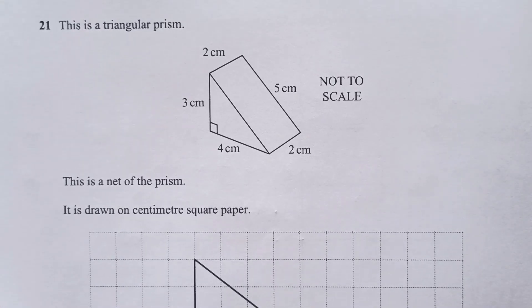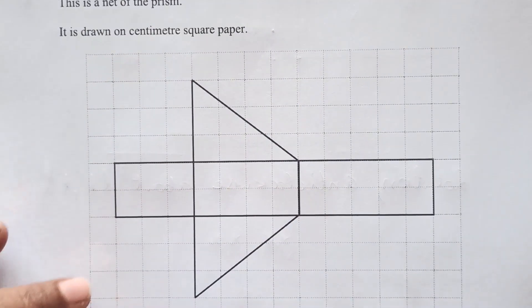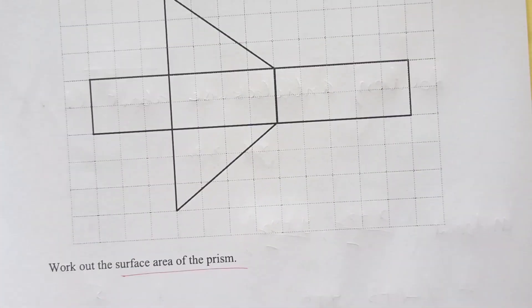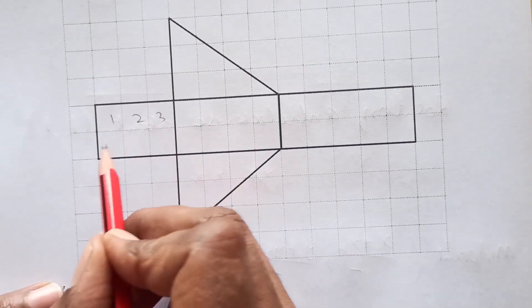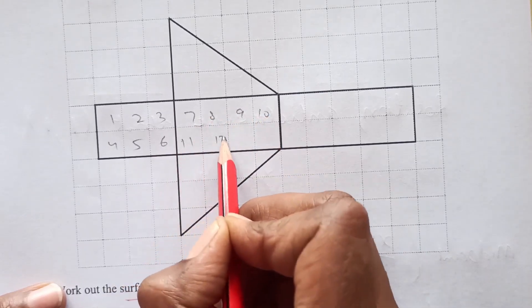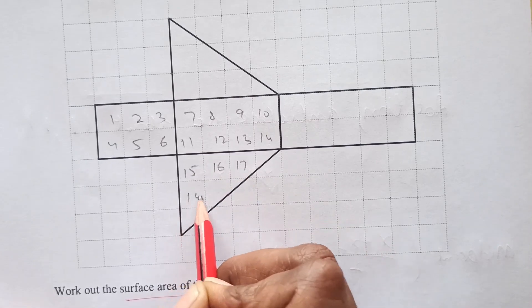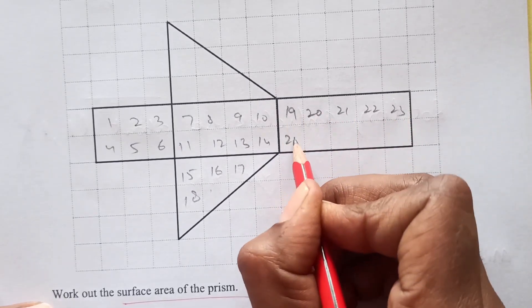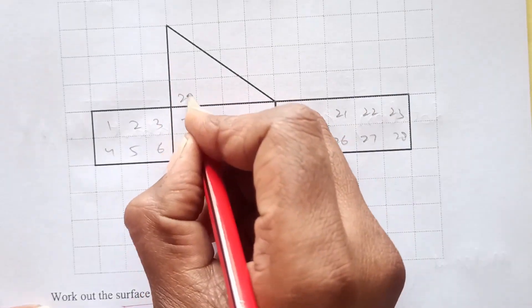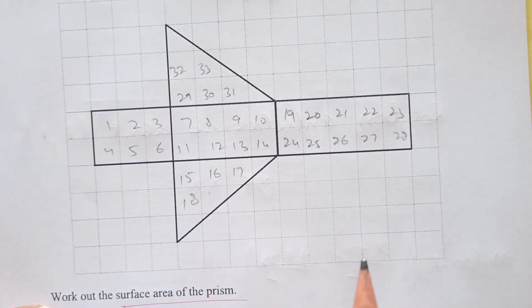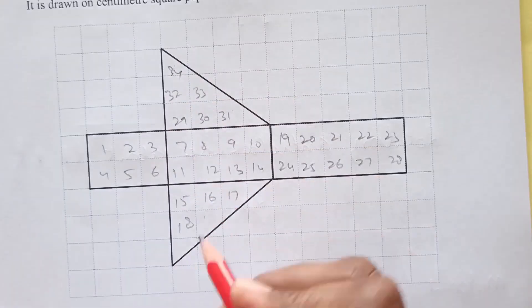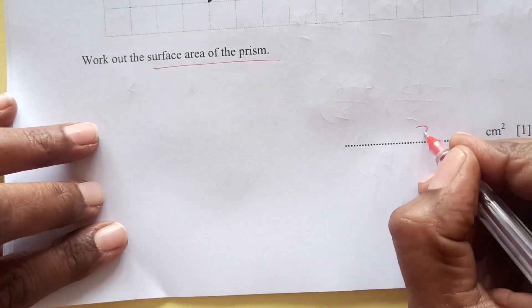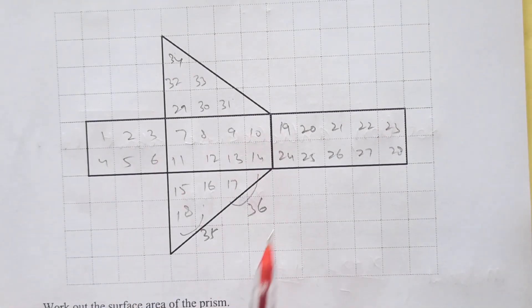Number 21. This is a triangular prism. This is the net of the prism drawn on centimeter paper. Let's count the full ones first: 1, 2, 3, 4, 5, 6, 7, 8, 9, 10, 11, 12, 13, 14, 15, 16, 17, 18, 19, 20, 21, 22, 23, 24, 25, 26, 27, 28, 29, 30, 31, 32, 33. Now this and this can be 34, this and this can be 35, and this and this can be 36. So our answer is 36 centimeter square. Just count the number of squares and count the more than half.